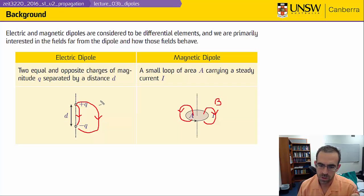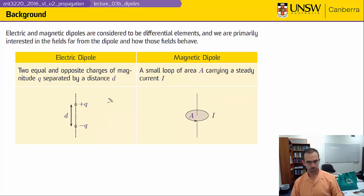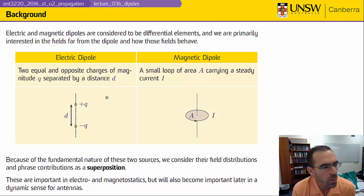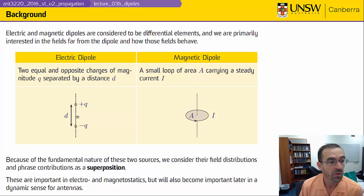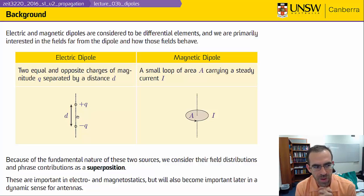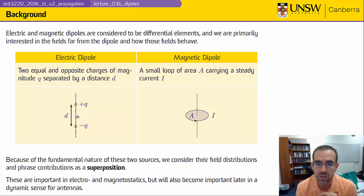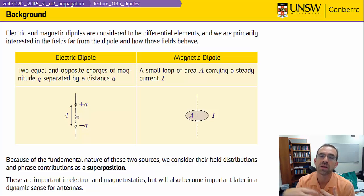Here I've got a B, and over here I've got an E. The way we're going to develop the fields from these sources is by superposition — I've got two point charges and I can compute the total field by adding up the fields from the independent charges. While these are electromagnetostatic quantities, they're also important in dynamics, and you're going to use some of the concepts we develop today when you talk about antennas later on in the semester.